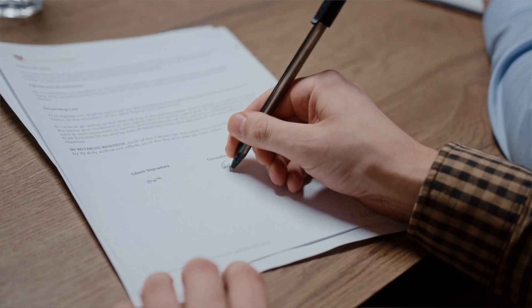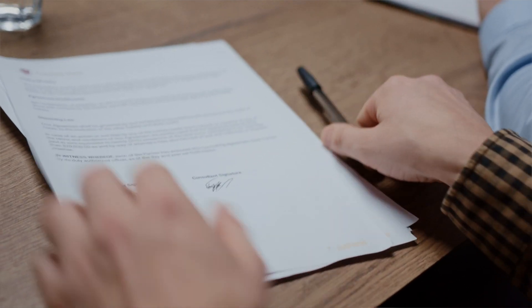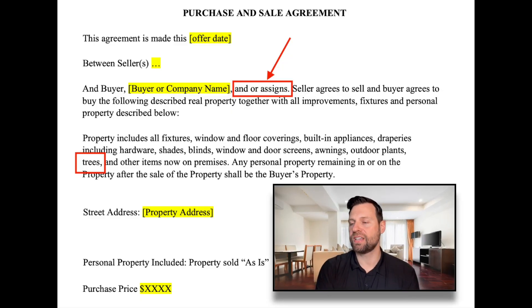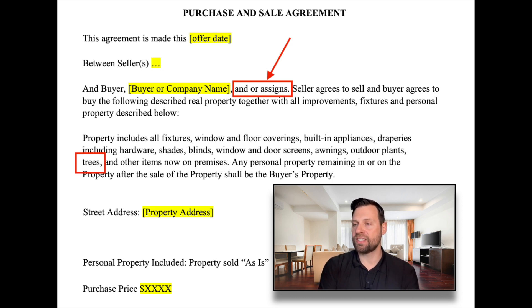This is an example of the type of contract that may be commonly used in off-market real estate transactions. They're very easy to find with just a quick Google search. So looking at this contract here, the first section — really the only thing that jumps out at me is the words 'or assigns.'